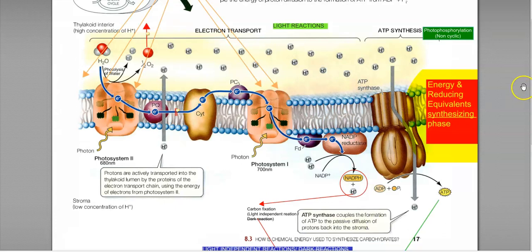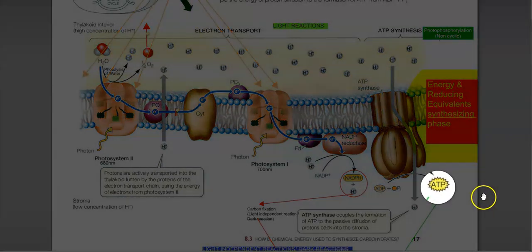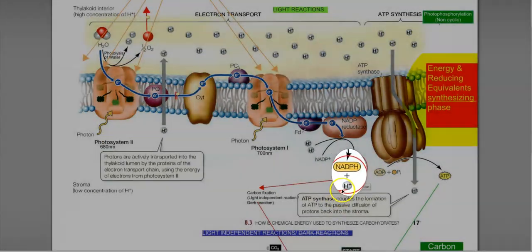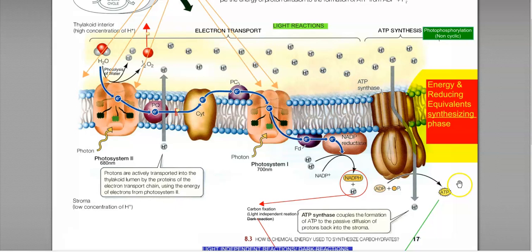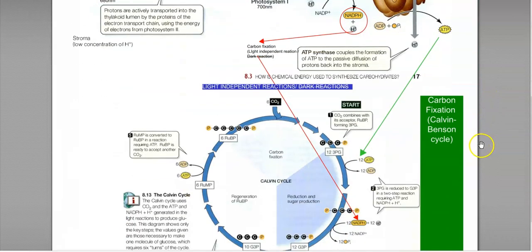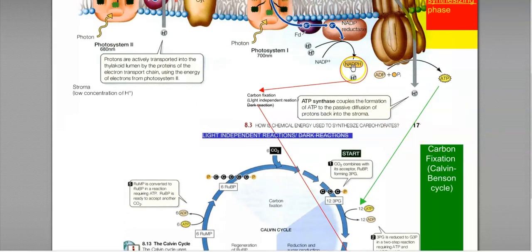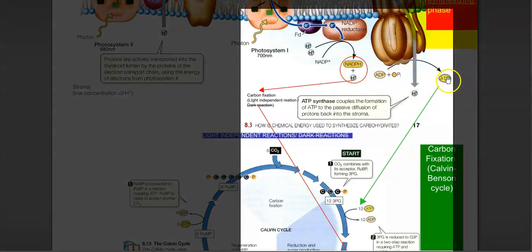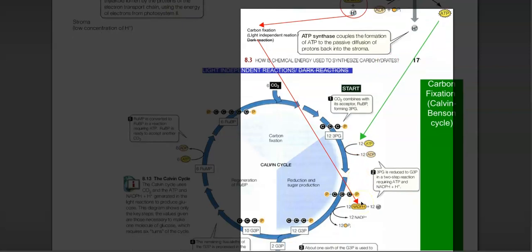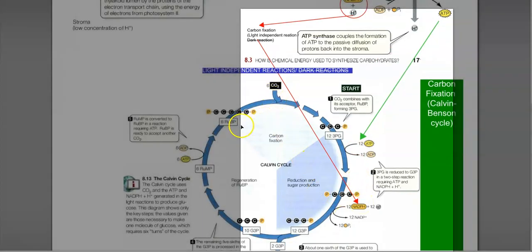This can be very clearly explained in this diagram. If you look at it, the first step involves production of ATP as well as NADPH, and this step is commonly referred to as the energy and reducing equivalent synthesizing phase, which commonly happens through the photophosphorylation process. The phase following this is the carbon reduction phase, or carbon fixation phase, where the NADPH and ATP formed in the photophosphorylation phase are utilized for fixing carbon dioxide into cell carbon.